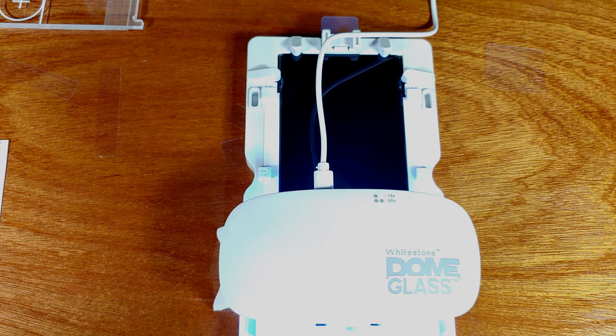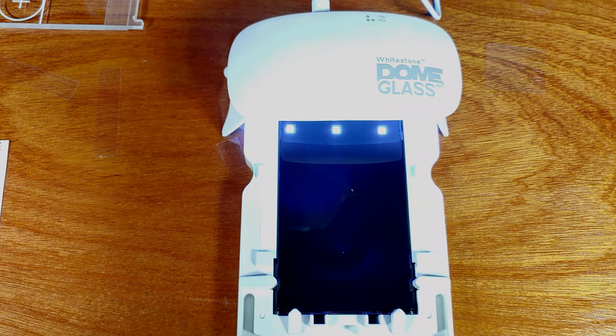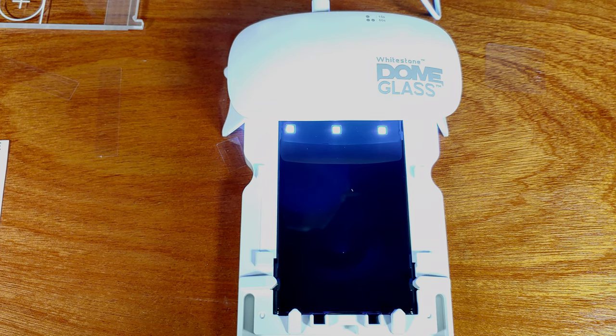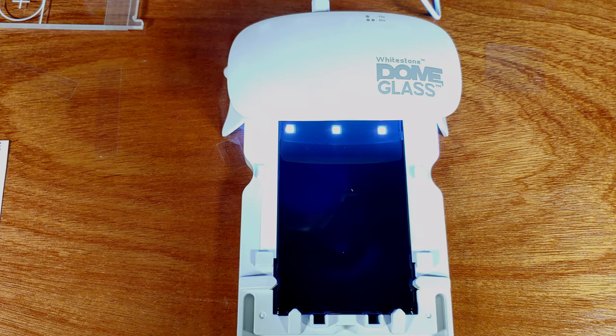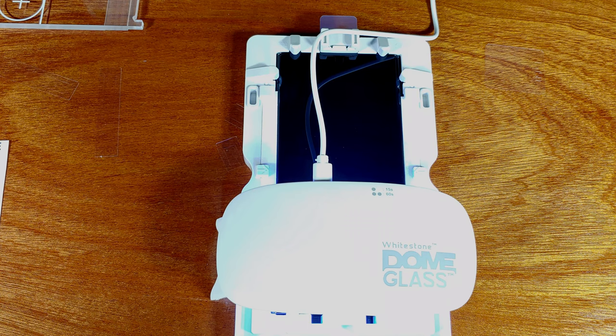And then you're going to use the included ultraviolet LED tool. You can set it up at the top, the middle, and the bottom, and you'll run it for 30 seconds the first time. That'll help it cure. Then you run the top and the bottom again at 60 seconds. Single click for 30 seconds and double click for 60 seconds.